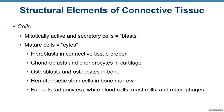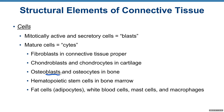Connective tissue is also made of cells. Mitotically active and secretory cells are called blast cells — like chondroblasts and fibroblasts. They divide and secrete. Mature cells are called cytes. Fibroblasts are found in connective tissue proper; chondroblasts and chondrocytes in cartilage; osteoblasts and osteocytes in bone; hematopoietic cells in bone marrow; fat cells called adipocytes; white blood cells; mast cells; and macrophages. There is high variety of different cells in connective tissues.